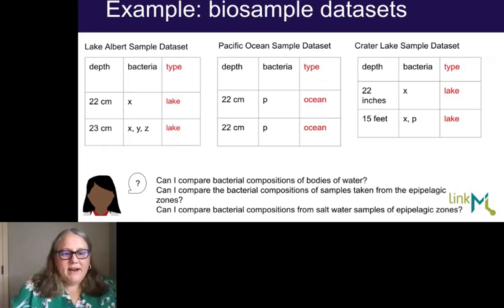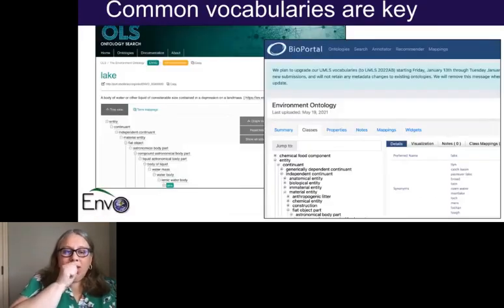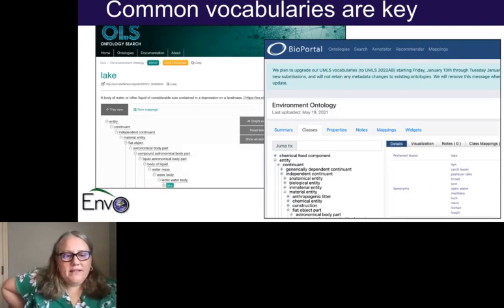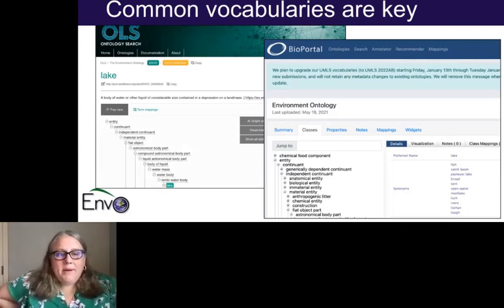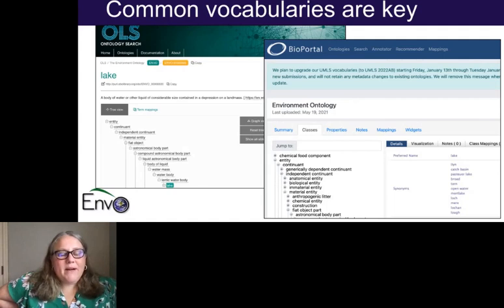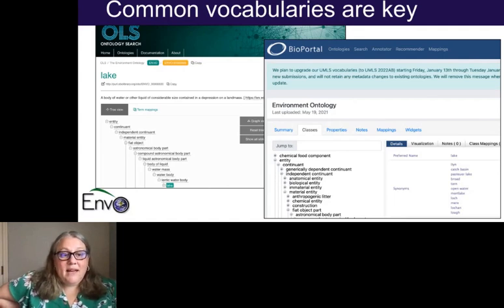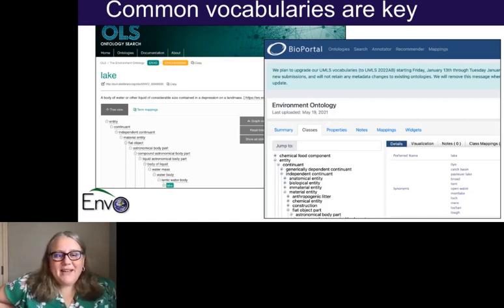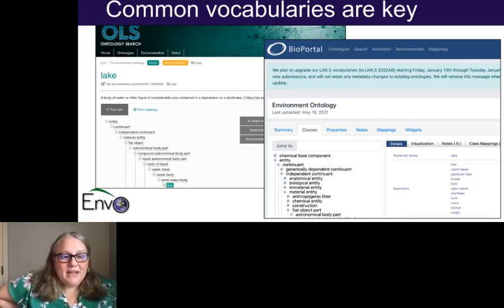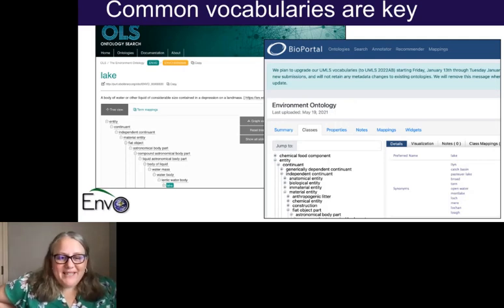She asks how to disambiguate different kinds of lakes. And this is where we'd suggest she look up existing work — experts have already defined a controlled vocabulary or ontology for describing environments. We'd encourage her to go to the Ontology Lookup Service or BioPortal, enter terms like 'lake' or 'ocean,' see the formal definitions, look for synonyms and cross-references, make sure the definition is formalized, and point her students and collaborators to it so they all share the same understanding.